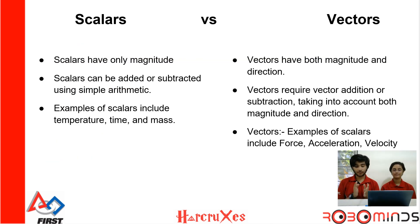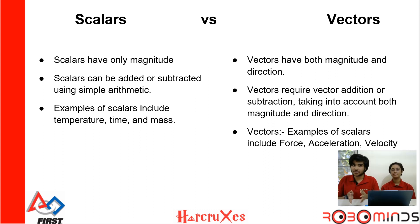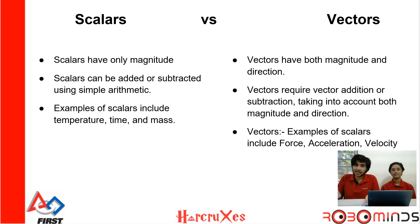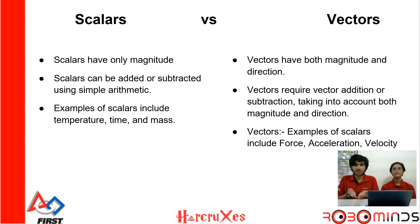We can now move on to scalars and vectors. Scalars are quantities which don't have a direction — for example, time or mass. It doesn't make sense to say you have three kilos in a particular direction. The good thing about scalars is you can just add them up. If I have a three-kilo weight in one hand and two kilos in the other, I have a total weight of five kilos.